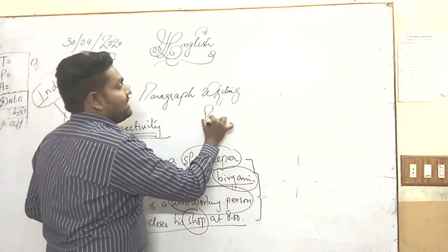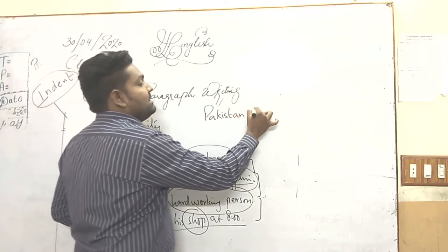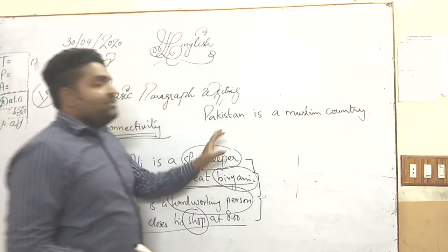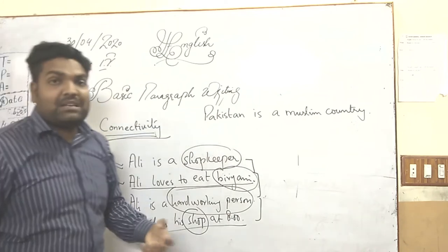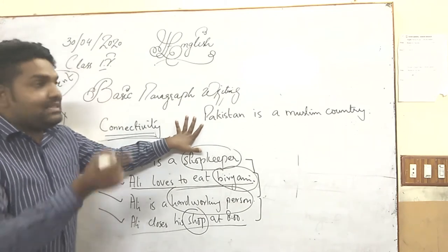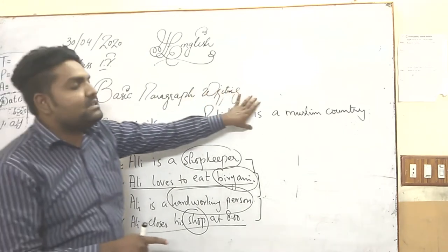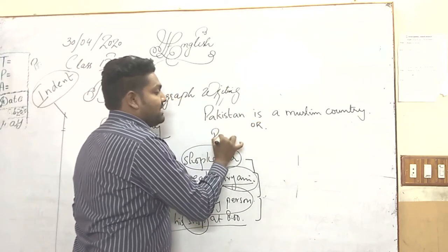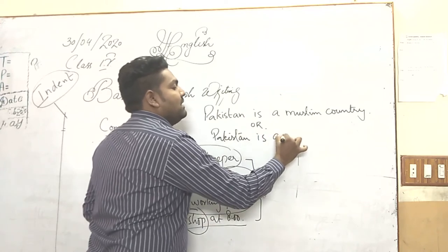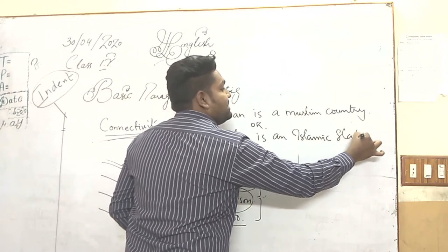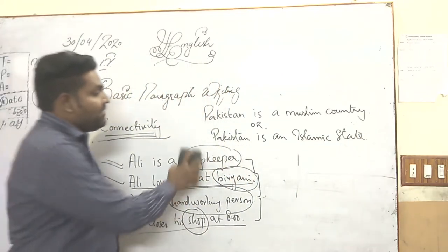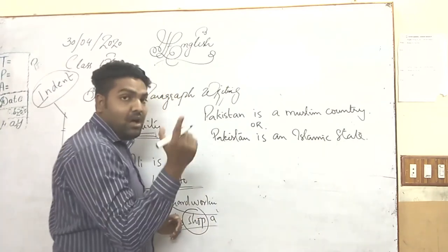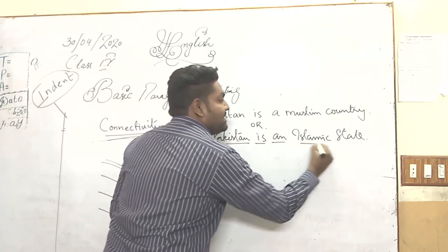For example, Pakistan is a Muslim country. In the first sentence I have mentioned that Pakistan is a Muslim country or Pakistan is an Islamic state. Then in the second sentence I have to mention the same condition — the sentence must be connected with the previous sentence. So the first sentence is: Pakistan is an Islamic state.